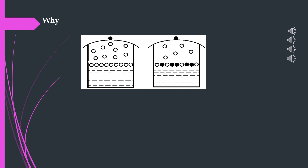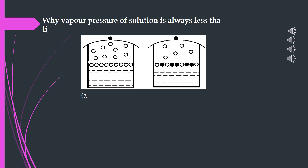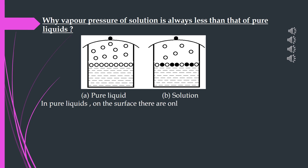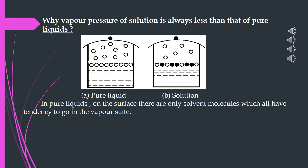Let's try to answer one very important question: why is vapor pressure of a solution always less than that of pure liquids or pure solvents? As we all know, a solution is made up of two components — solute and solvent. In case of pure liquids, on the surface there are only solvent molecules which all have tendency to go into the vapor state. Let's suppose we have an example of water molecules. In the first case, as shown in figure A, the whole surface is occupied by water molecules represented by hollow white circles. As water is a volatile liquid, after gaining energy the molecules can go into the vapor state and exert pressure on the liquid surface, which acts as vapor pressure.